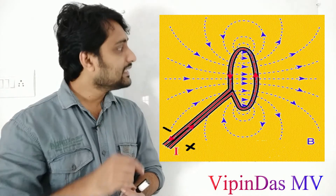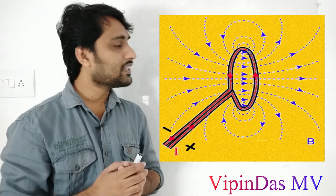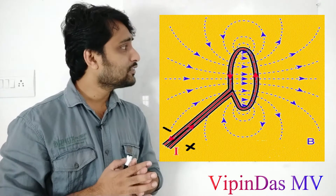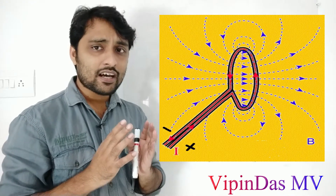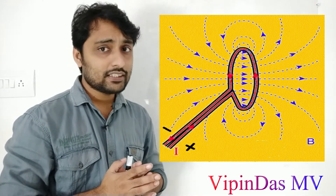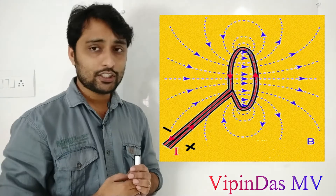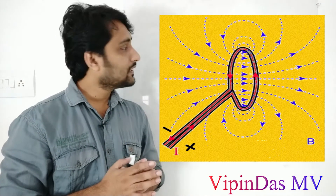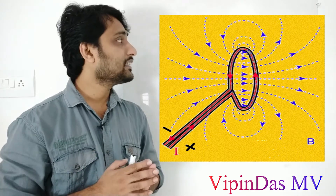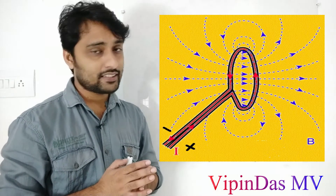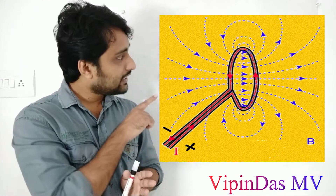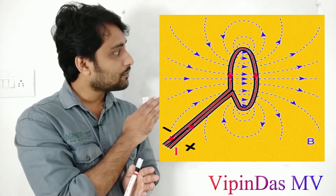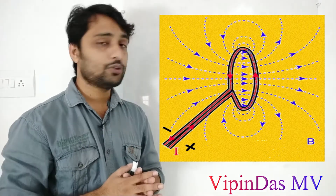At the center, this magnetic line of force from each and every point is crowded together. So the magnetic lines of force are very high at the center of the loop, because each and every point contributes concentric circles that crowd at the center. Also, one straight magnetic line of force passes through the center of the loop.